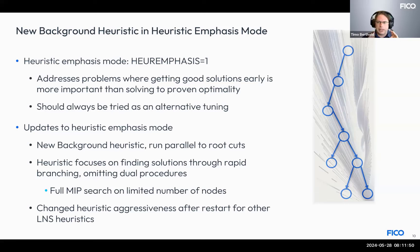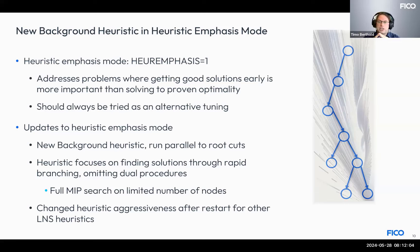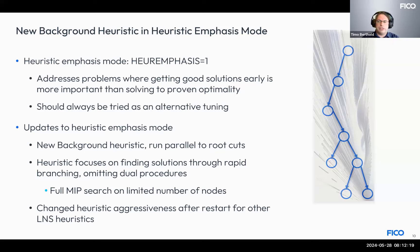In this release, we have again improved the heuristic emphasis mode. One improvement is a new heuristic running on a parallel thread to the root node, performing a fast branch-and-bound search for cases where the problem can be solved quickly using just branch and bound — no cuts, no strong branches, no frills. Additionally, this heuristic mode has been tuned to work better with features introduced since it was first implemented.